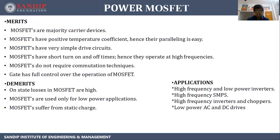Merits of power MOSFET: MOSFETs are majority carrier devices; they have a positive temperature coefficient, making paralleling easy; they have very simple drive circuits; they have short turn-on and turn-off times, enabling high-frequency operation; they do not require commutation techniques; and the gate has full control over MOSFET operation. Demerits: on-state losses are high; MOSFETs are used only for low power applications; and MOSFETs suffer from static charges. Applications include high-frequency low-power inverters, high-frequency SMPS, high-frequency inverters and choppers, and low-power AC and DC drivers.